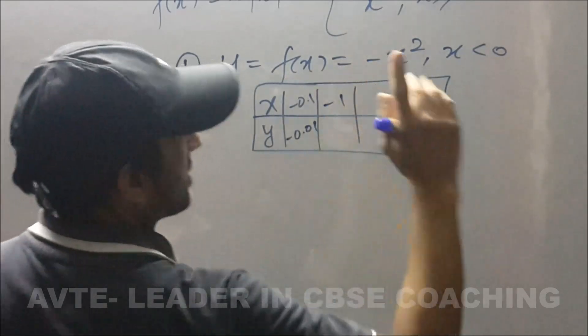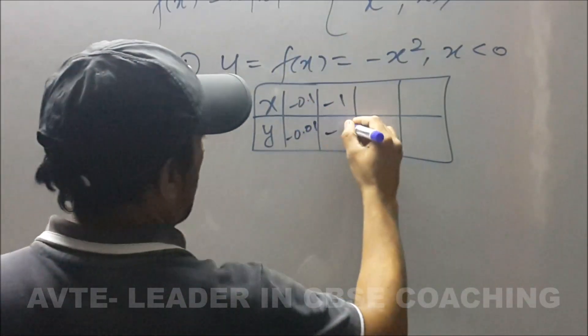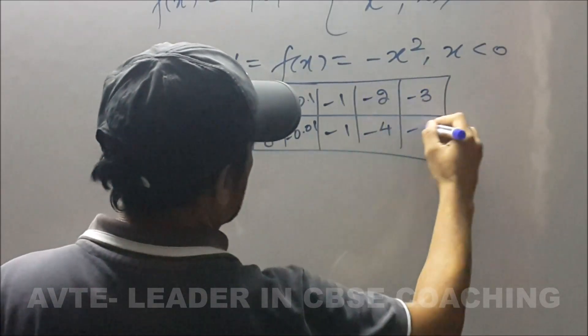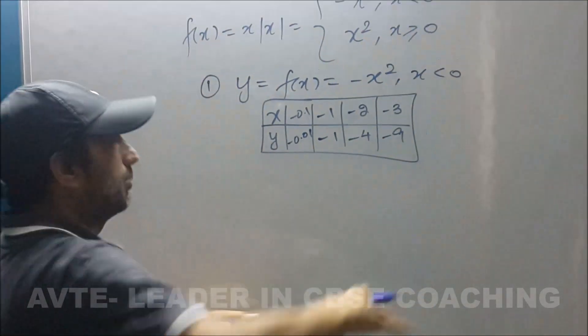If I put minus one, the square of minus one is one but outside is a negative so it will be minus one. For minus two it is minus four. Same way minus three it is minus nine. So it is a downward parabola.